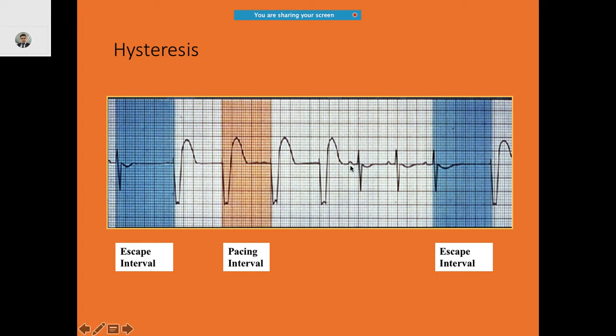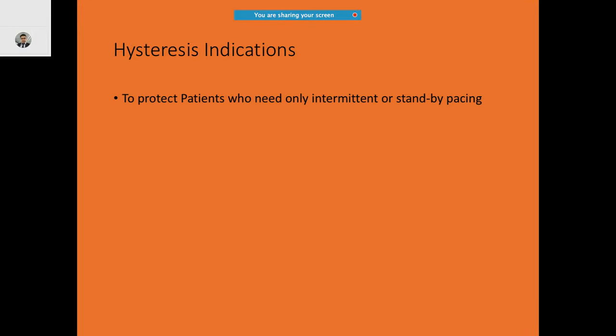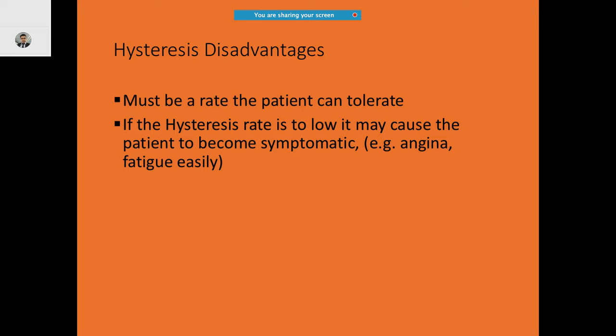For example, when there is intrinsic activity — say three intrinsic beats — there is a little bit of extra time called hysteresis. During that time you allow it some extra time so that a spontaneous beat may happen. You are trying to protect the patient's intermittent or intrinsic conduction and trying to prevent fusion or pseudo-fusion as well.